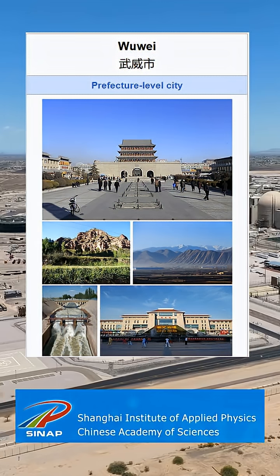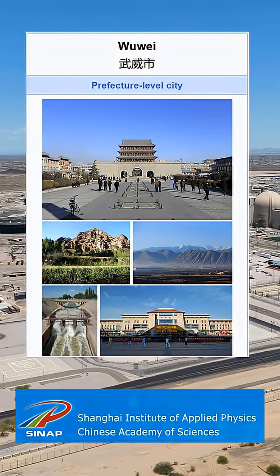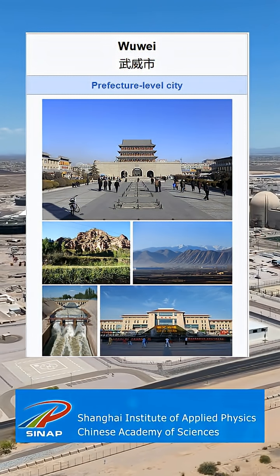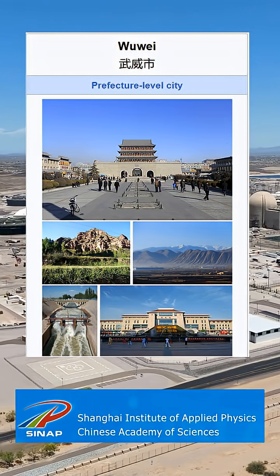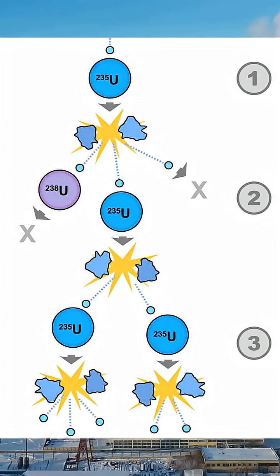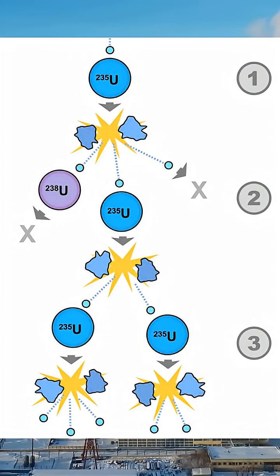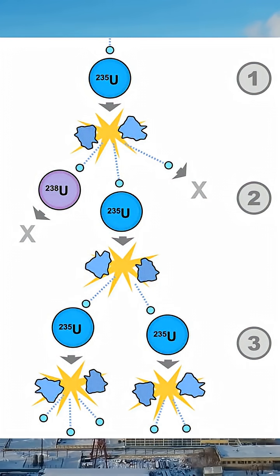The reactor is located in Wuwei, Gansu province and is operated by the Shanghai Institute of Applied Physics under the Chinese Academy of Sciences. It produces two megawatts of thermal power and reached sustained nuclear criticality in October 2023.